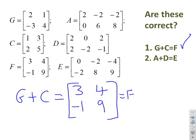Next one, I need to do A plus D. If I do A plus D: 2 plus 2 is 4, -2 plus 0 is -2, -2 plus 2 is 0, 0 plus 2 is 2, 6 minus 2 is 4, and 8 minus 1 is 7. You'll see that A plus D is not equal to E.